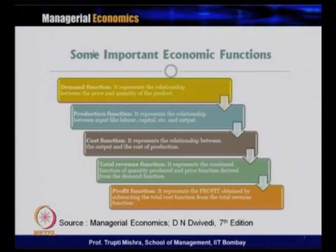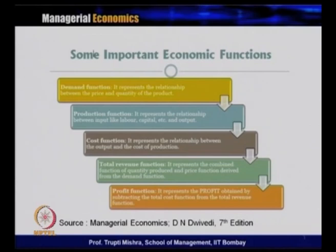Till now our discussion focuses on the demand function. But apart from the demand function, there are certain other topics where we use the relationship between two variables in a functional form — like production function, which represents the relationship between inputs like labor and capital with the output. We also talk about the cost function, which is the relationship between output and the cost of production. Then we have the total revenue function, which is the combined function of quantity produced and price based on the demand function. And the profit function, which is the difference between total revenue and total cost — so whenever there is a change in total revenue or total cost, it generally affects profit.